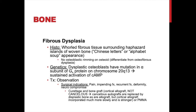Treatment is usually observation since it generally doesn't progress. Surgical intervention may be needed for severe pain, impending pathologic fracture due to bone thinning, recurrent fractures, severe deformity or leg length discrepancy, or neurologic compromise. When operating, curettage is performed followed by bone grafting — but cortical allograft, not cancellous, must be used. Cancellous autograft gets replaced by the same dysplastic bone; cortical allograft takes years to be incorporated and provides structural support for much longer. PMMA is also an option since the local mutation causes osteoblasts to create fibroblastic rather than true bone.